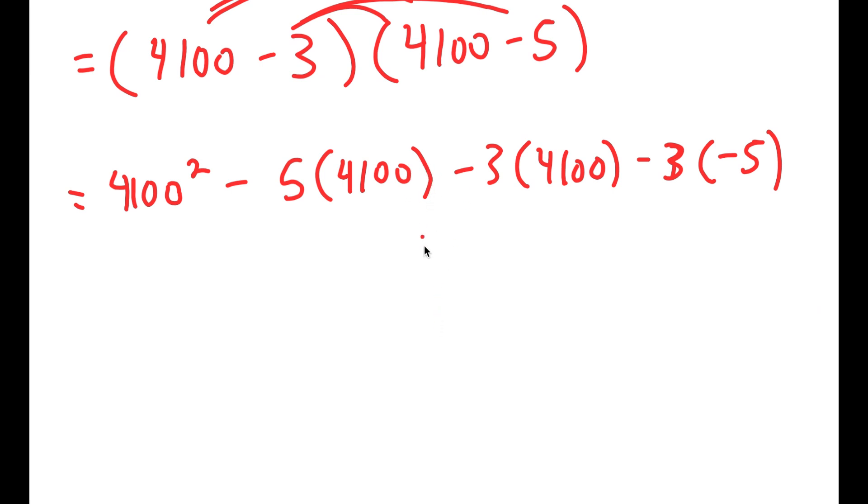So now, 4,100 squared is equal to 41 squared plus 4 zeros. 41 squared is 1,681, so I'm just going to add 4 zeros to the end there.